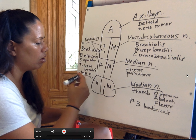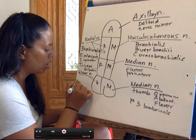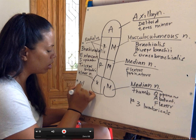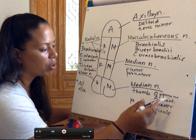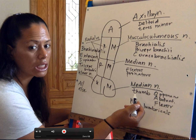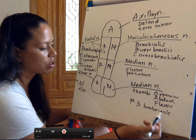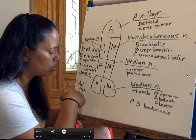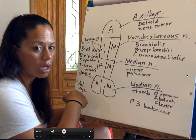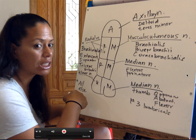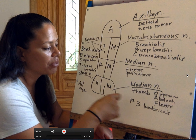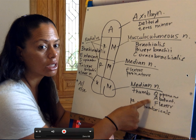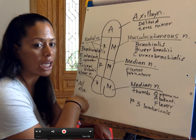Ulnar nerve controls basically all muscles other than the opponents, abductor, flexor of the pollicis, and the first three lumbricals. So if you see adductor pollicis, you know it's ulnar. Abductor is controlled by median; adductor is controlled by ulnar. This is a typical trick question that could be asked in an upper division course.